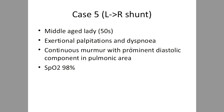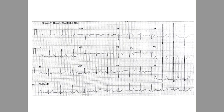Case: A 50-year-old lady with exertional palpitations and dyspnea, continuous murmur with a prominent diastolic component in the pulmonary area, normal saturation. Left-to-right shunts are generally amenable to clinical diagnosis based on murmurs — continuous murmur suggests PDA. ECG shows isolated LV enlargement with LV diastolic overload: prominent septal Q-waves and upright T-waves without ST depression. This must be interpreted in the context of clinical history to diagnose patent ductus arteriosus.